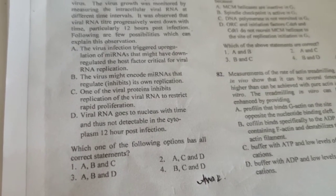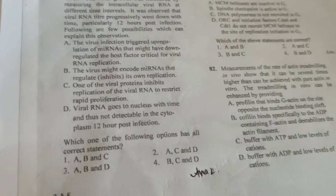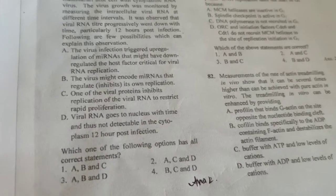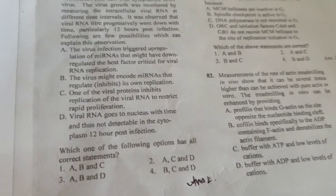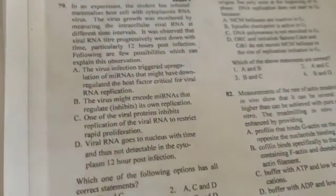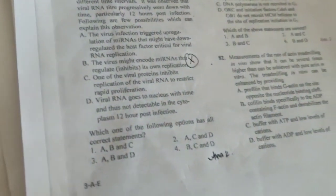Second, virus might encode miRNA that regulates or inhibits its own replication. Virus never inhibits its own replication. If it does, then it will decrease its virulence. So it never inhibits its own replication. This option is incorrect.